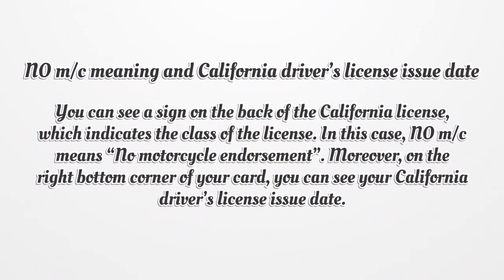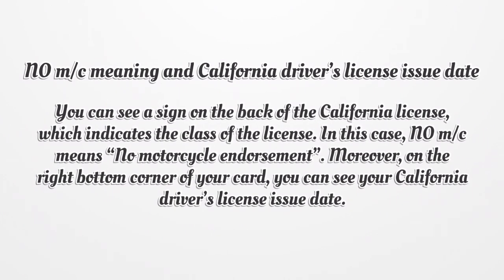NOMC Meaning and California Driver's License Issue Date. You can see a sign on the back of the California license which indicates the class of the license. NOMC means No Motorcycle Endorsement. Moreover, on the right bottom corner of your card, you can see your California driver's license issue date.